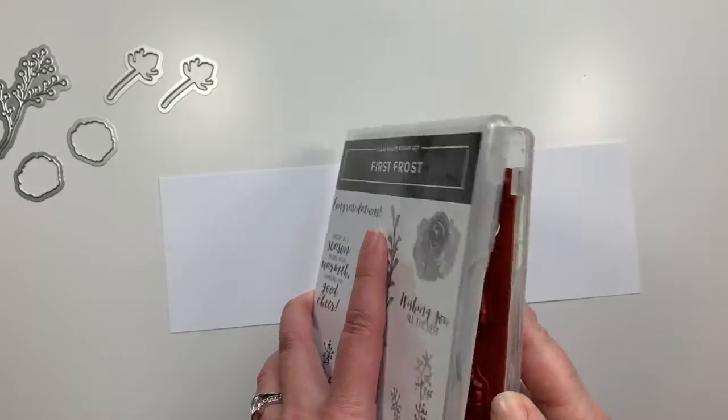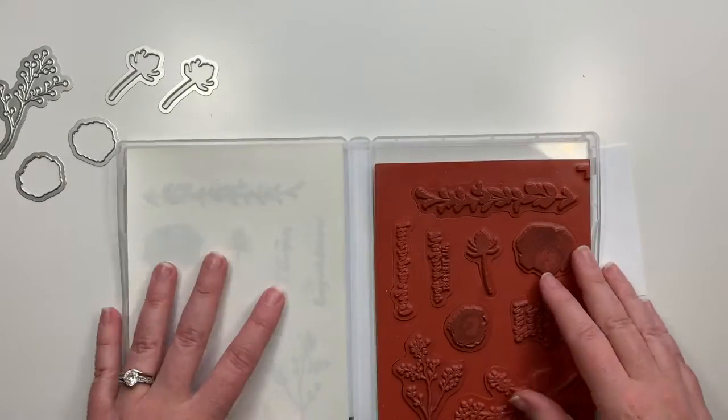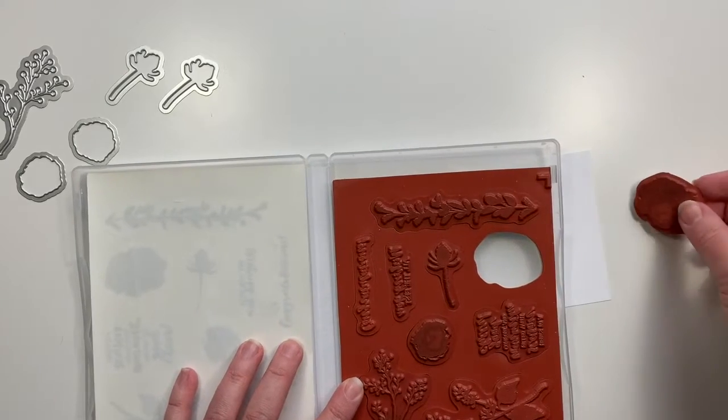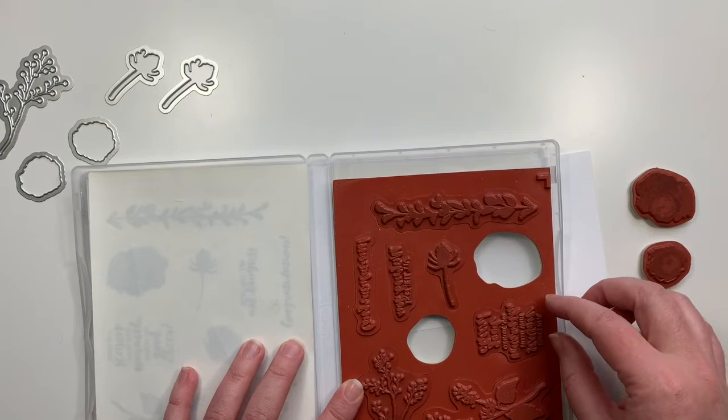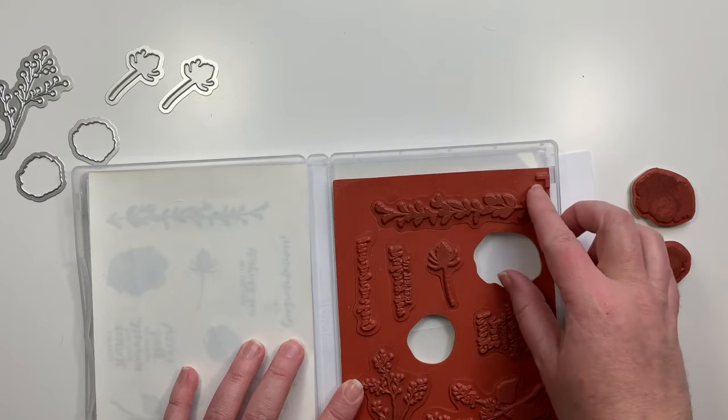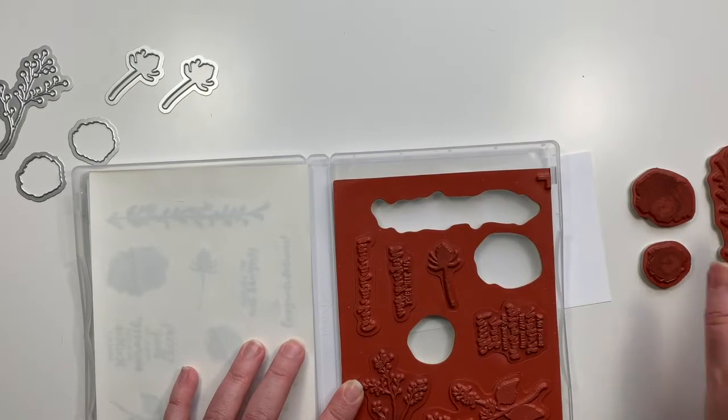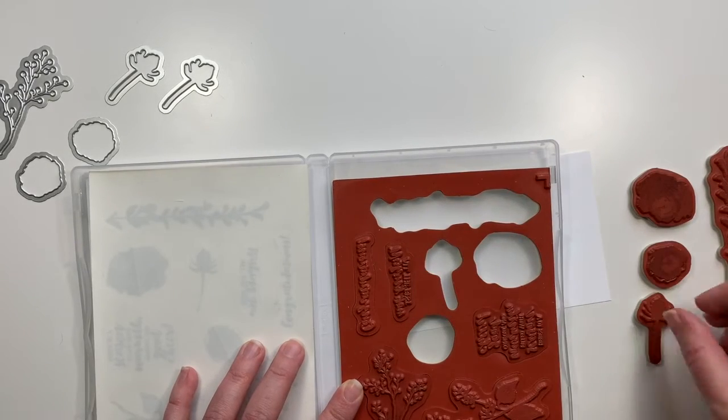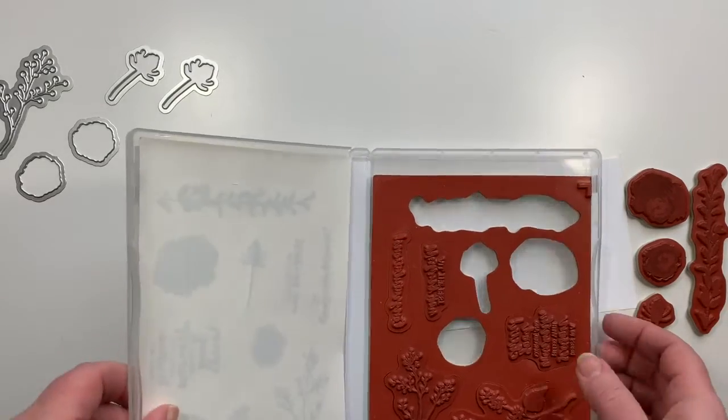From the stamp set we're going to use a couple pieces, so of course we're going to use the large flower as well as the small one. We're going to use this piece and then of course that little flower guy. And we're going to get our sentiment out later.